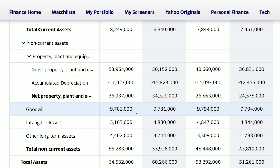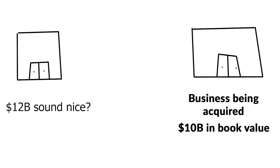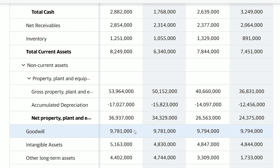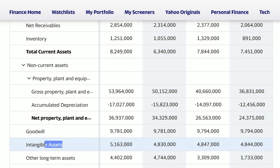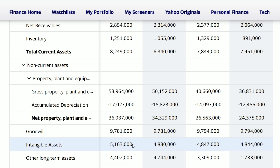When a business goes and acquires another business, they usually pay a significant premium. For example, say a company's book value is roughly $10 billion, and the acquiring company buys it for $12 billion — that means they paid an extra $2 billion in Goodwill. This is why Warren Buffett sees Goodwill as a soft asset: you can't really liquidate Goodwill because it's not really worth anything once you've acquired the business. Intangible assets are also soft assets — things like brand recognition and brand names — not physical assets that can be converted into cash. So keep these two figures in mind when looking at a balance sheet.